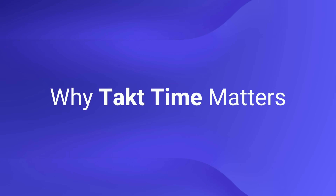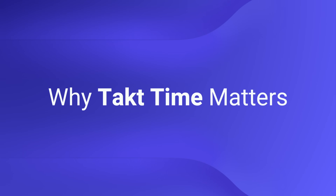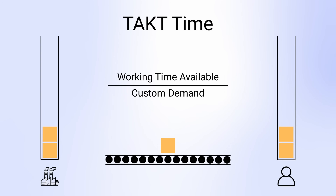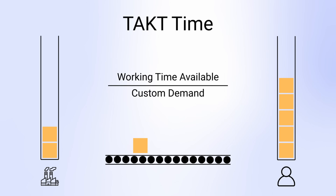Why it matters. Here's why TACTIME is so important. First of all, it gives you production balance — every station knows the north star that it's working towards, and can calibrate depending on how it's matching that actual production expectation. This also means that you're baking in waste elimination into your processes. Machines producing too fast can be reeled in; machines producing too slow can be looked at, fixed, and given increased production.